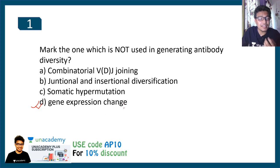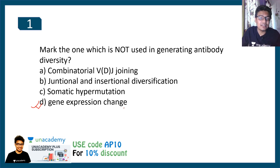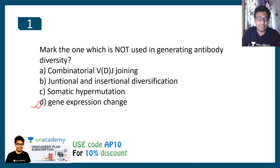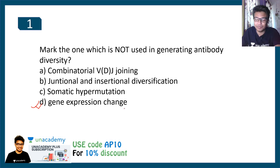The basic concepts behind this question are VDJ recombination, somatic hypermutation, and class switching. You can take a look at all of these concepts described in the I button — click on it to get the full concept explanation.